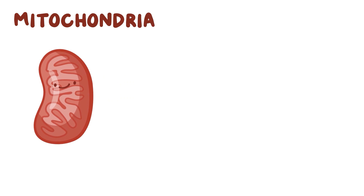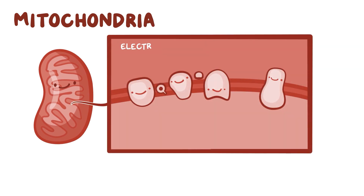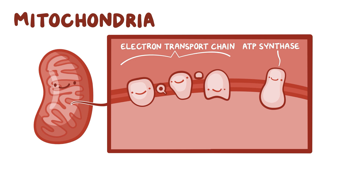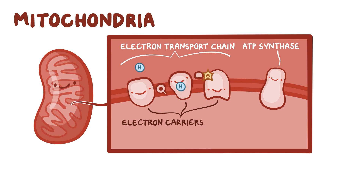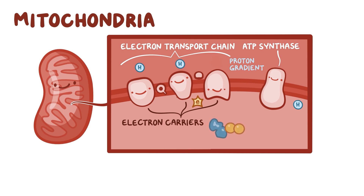The mitochondria are the main energy producing factories of a cell, and they do so with the help of the electron transport chain and the enzyme ATP synthase. The electron transport chain is made up of complexes of proteins or lipids called electron carriers embedded within the inner mitochondrial membrane, which pass electrons along like the baton in a relay race. This movement of electrons helps establish a proton gradient that drives ATP synthase to phosphorylate adenosine diphosphate, or ADP, into ATP.